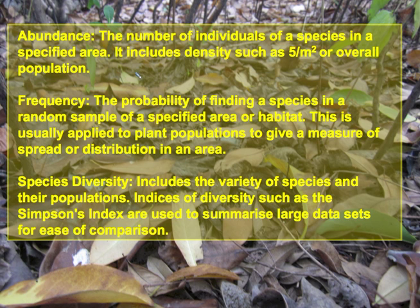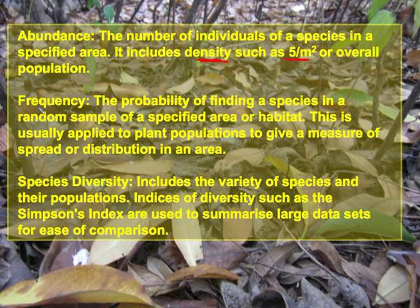The term abundance refers to the number of individuals of a species in a specified area. It includes density, which refers to the number of individuals per unit of area — for example, five plants per square meter — or it can refer to the overall population, such as 750 seedlings in a plot or 750 mice in a barn.